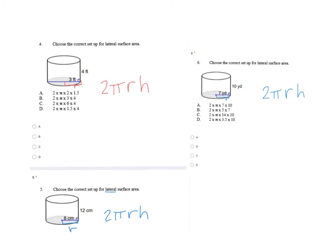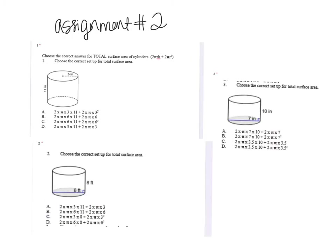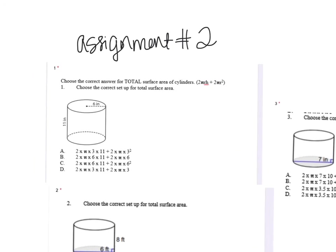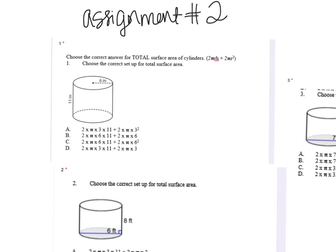This is assignment two. The only difference here is we're finding total surface area, which uses the original lateral formula plus an extra term: two times pi times radius times height, plus two times pi times radius squared.